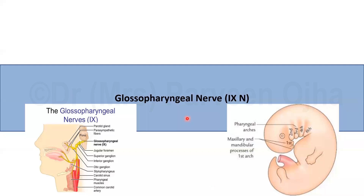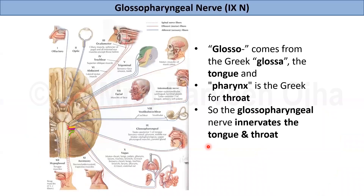In this lecture, we will discuss the glossopharyngeal nerve, the ninth cranial nerve and embryologically the nerve of the third pharyngeal arch. The glossopharyngeal nerve derives its name from two Greek words: glosso, meaning tongue, and pharynx, meaning throat. So it is a nerve which innervates the tongue and the throat.